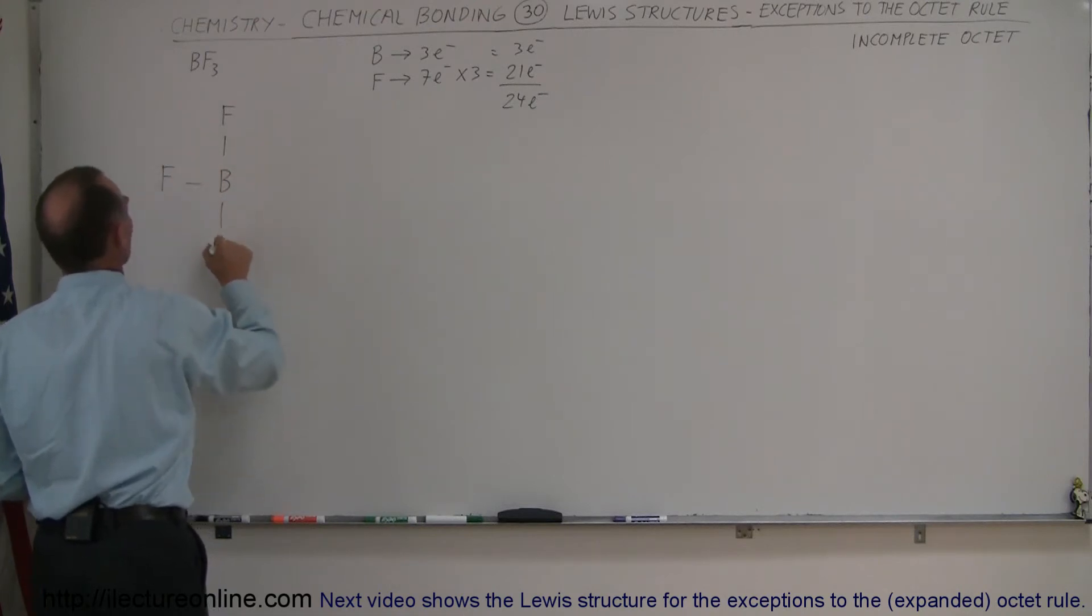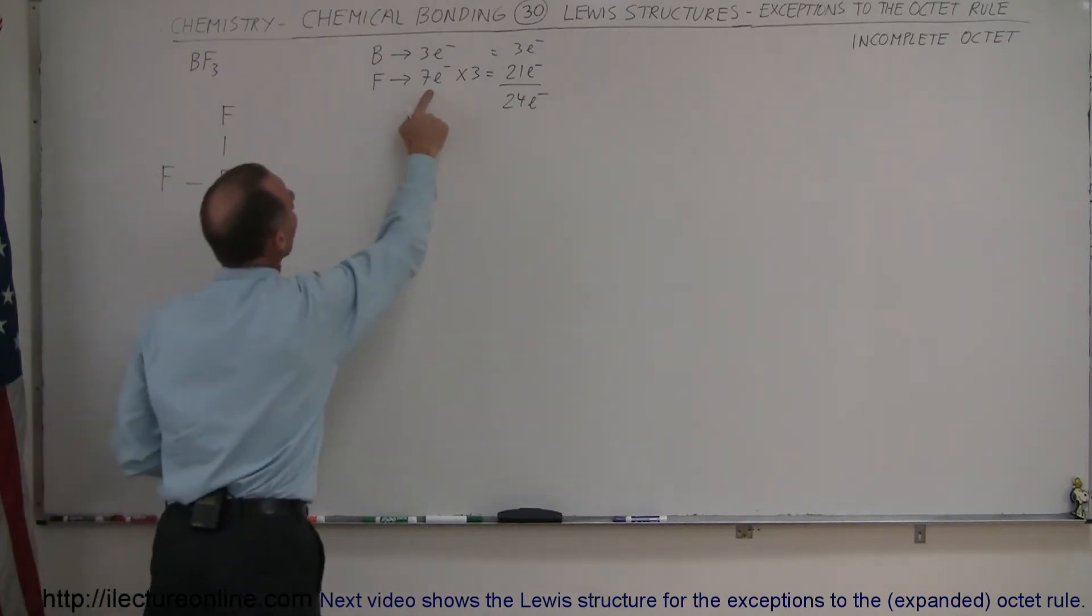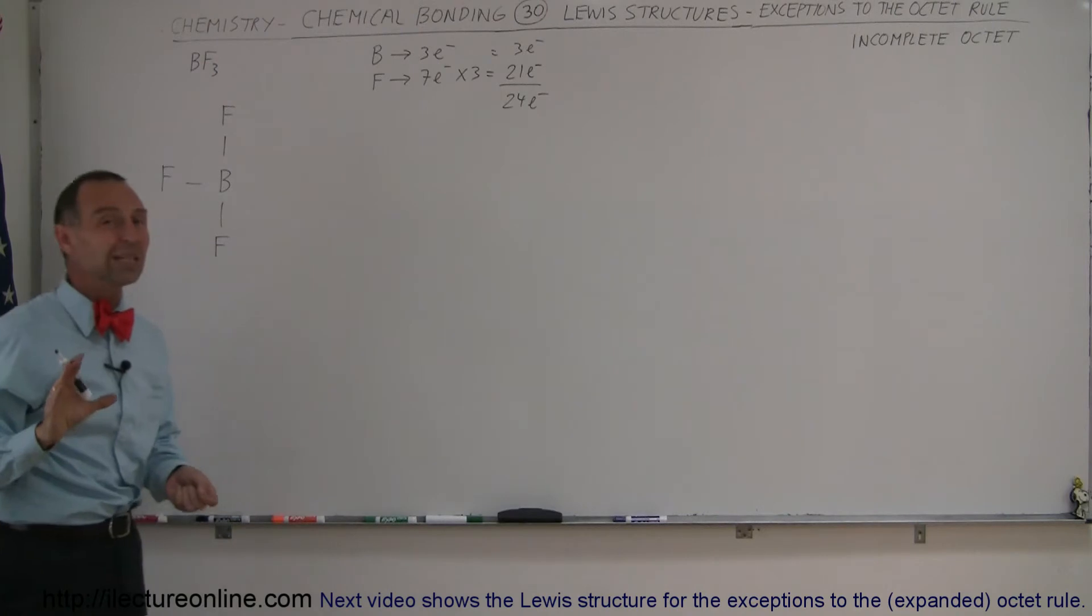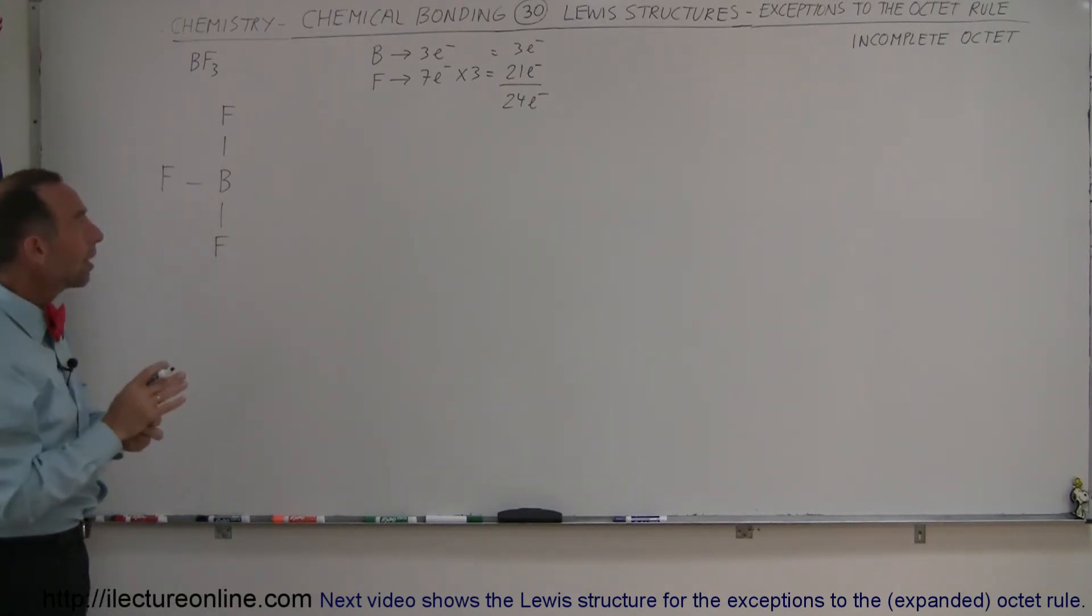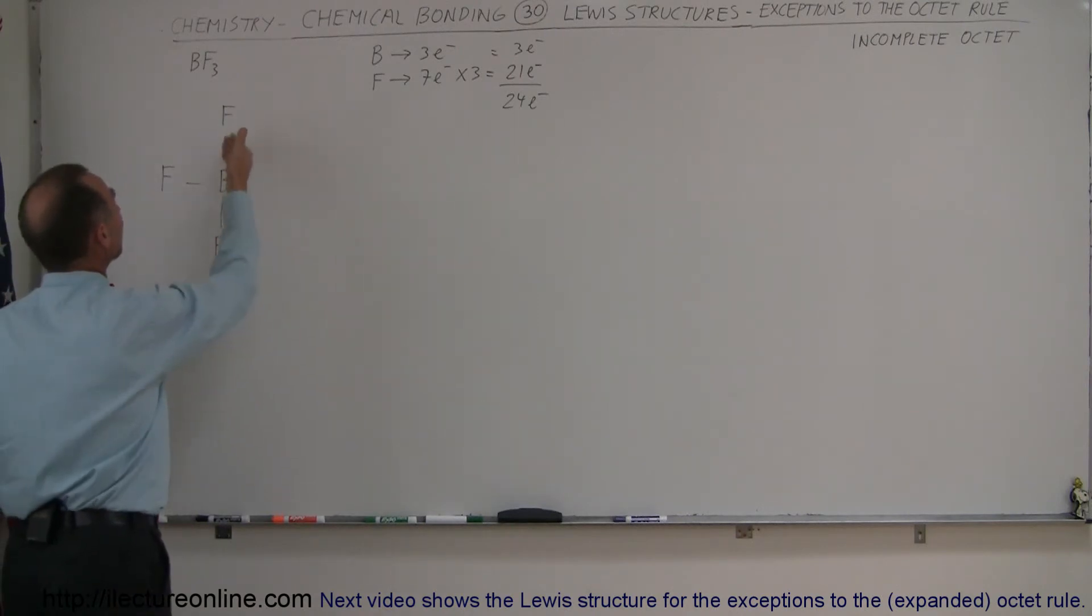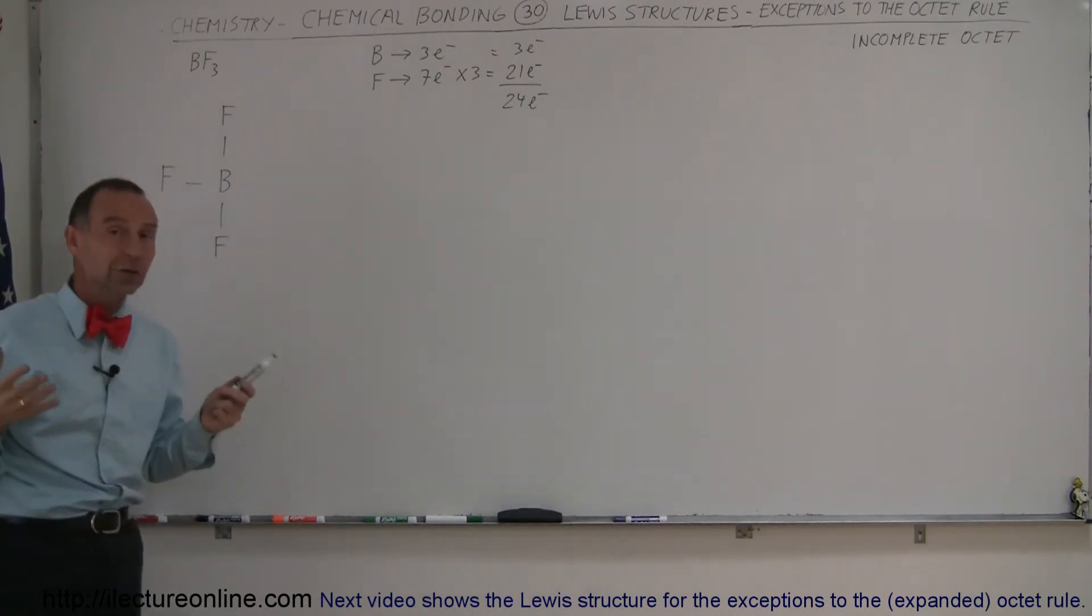Notice that the fluorine atom has seven valence electrons, so they only need to make one bond. That looks pretty good. Boron has three valence electrons, which means it has three electrons available to make those bonds. It looks like a fairly good arrangement here.